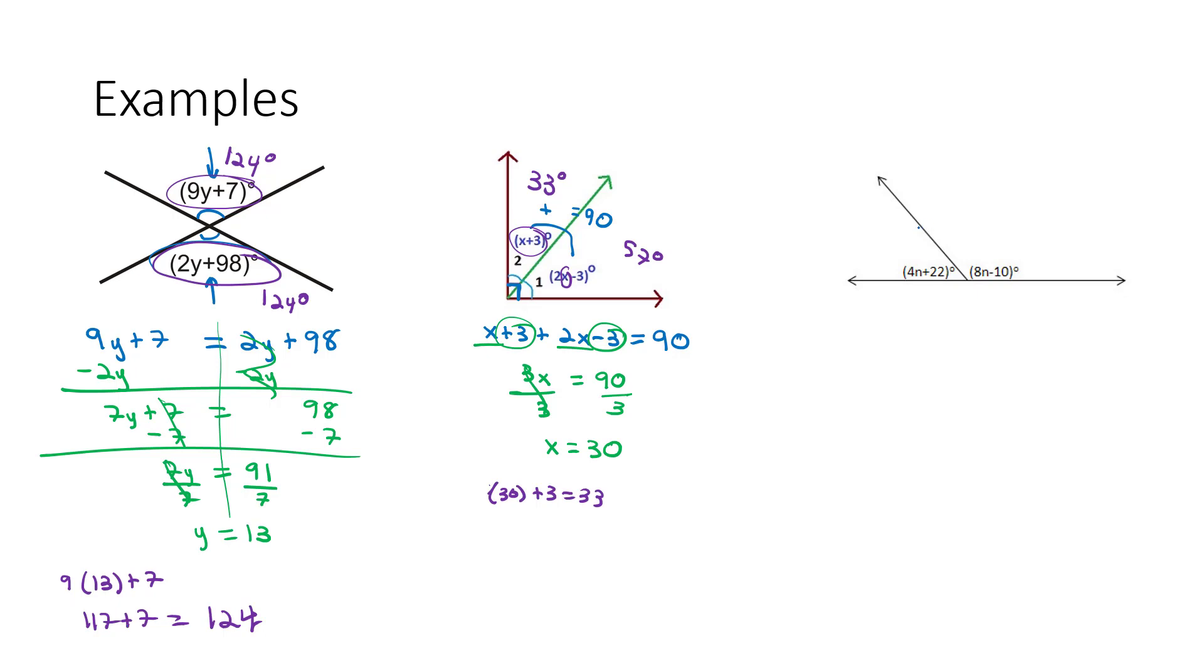These next two angles combine to make a straight line, which means they are supplementary. So they are going to add to equal 180 degrees. Really similar here. 4n plus 22, add the second angle, 8n minus 10. That's going to equal 180 degrees because it's a straight line. They are supplementary.